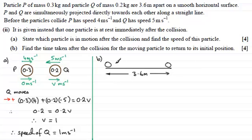And we'll mark in their initial speeds. P was moving at 4 metres per second and Q was moving at 5 metres per second. We'll mark those particles in. We'll mark those particles in as P and Q. Now, they're going to collide. Let's say they collide at that point there.